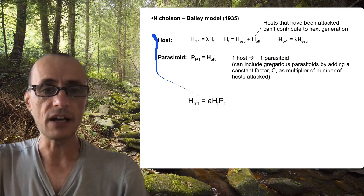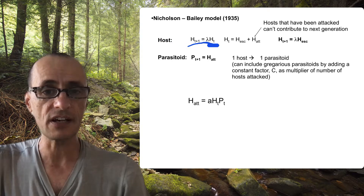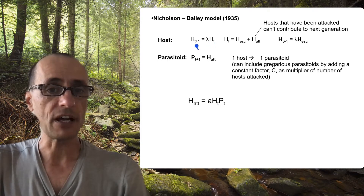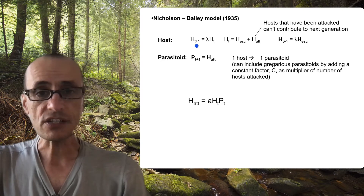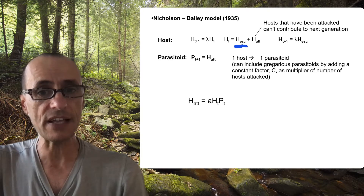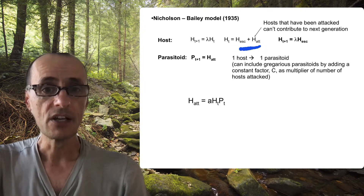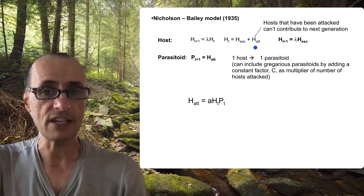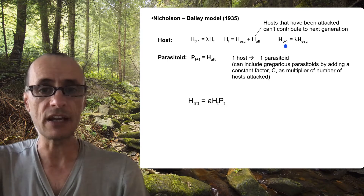Here is the very simple equation for the host. It uses the discrete time finite rate of increase equation, where if you know the host at time t, you multiply it by that lambda term to figure out how many hosts are present at time t+1. The hosts that can make it to that next generation are only those that escape parasitism — those that get attacked can't make it. So we split the total number of hosts into those that escape and those that are attacked, and only the ones that escape are multiplied by lambda to figure out the population in the next generation.